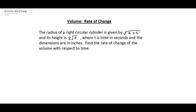This video is going to look at a rate of change dealing with the volume. Here we're presented with the problem: the radius of a right circular cylinder is given by the square root of t plus 2, and its height is one half the square root of t, where t is time in seconds and the dimensions are in inches. Find the rate of change of the volume with respect to time.